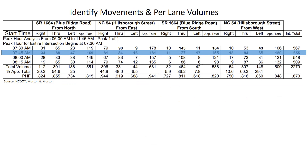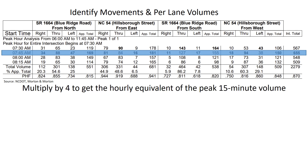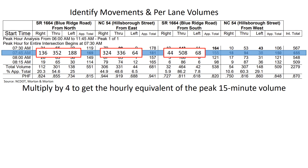Starting with this data, we're going to multiply that 15-minute volume by four to get the hourly equivalent of that peak 15-minute volume. For Blue Ridge Road from the north, we're going to have right of 136, through of 352, and left of 188 vehicles. We can carry out the same multiplication for Hillsborough Street from the east, Blue Ridge from the south, and Hillsborough from the west.